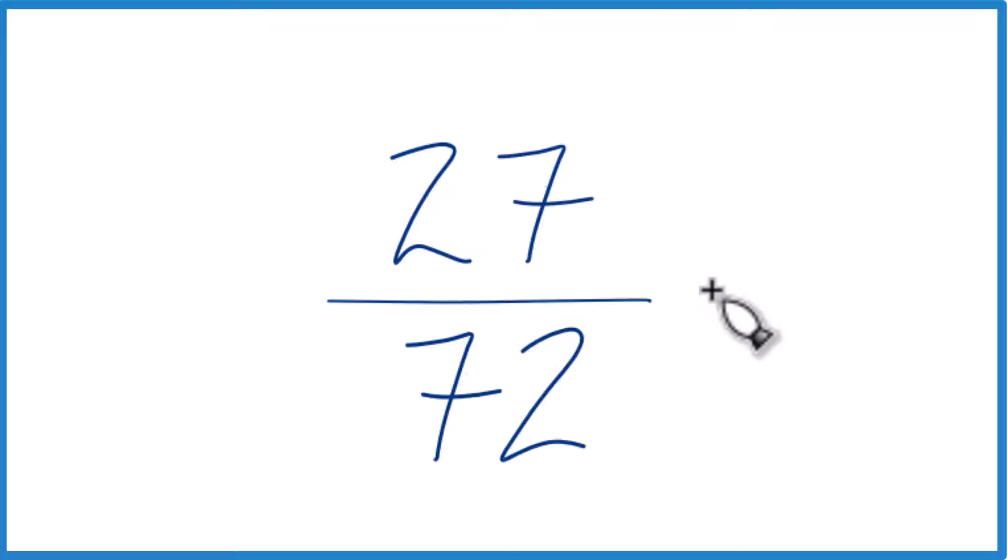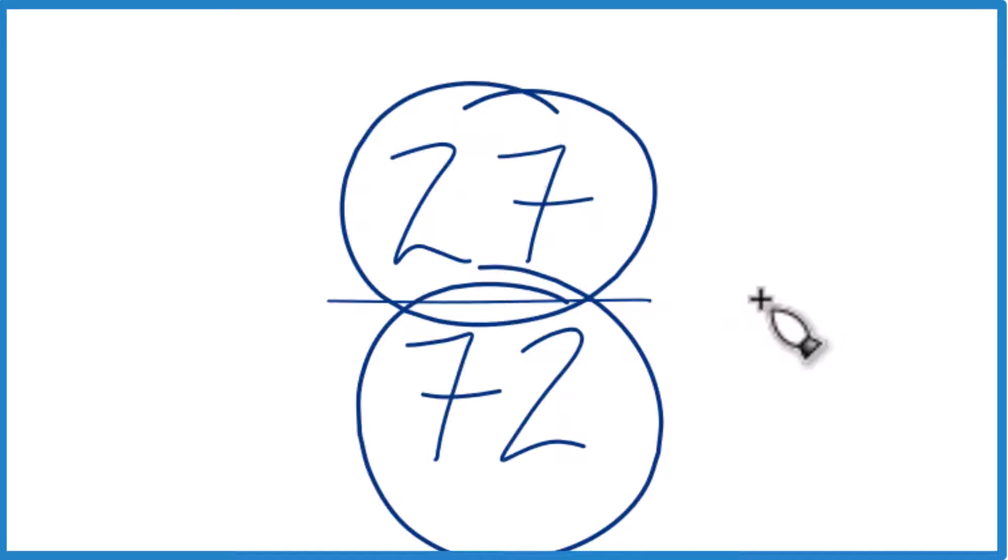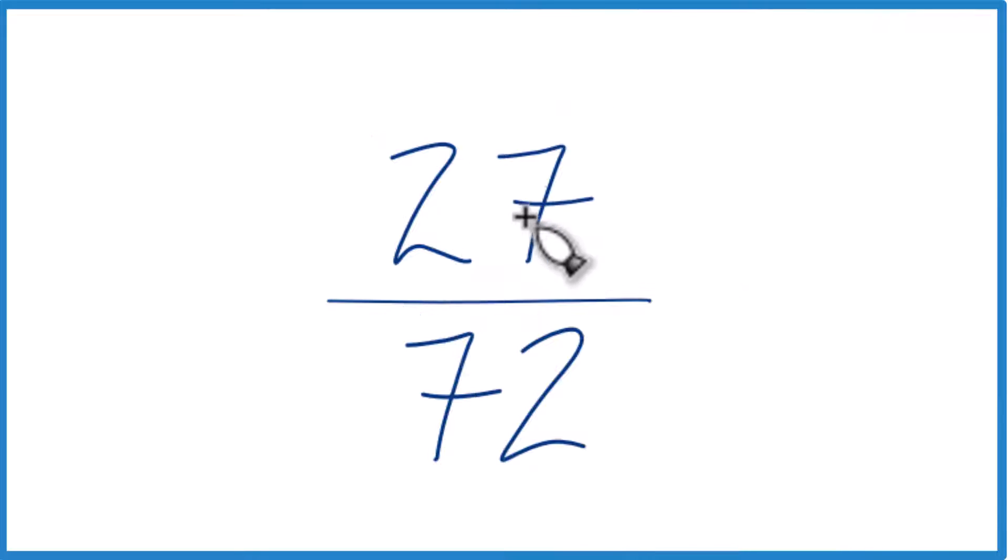To do that, we need to find a common factor, something that goes into 27 and 72 evenly. I know that 9 goes into 27 three times, and 9 times 8 is 72. So I'm going to divide the numerator and the denominator by 9.